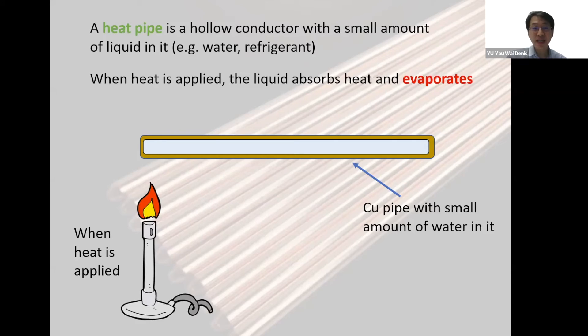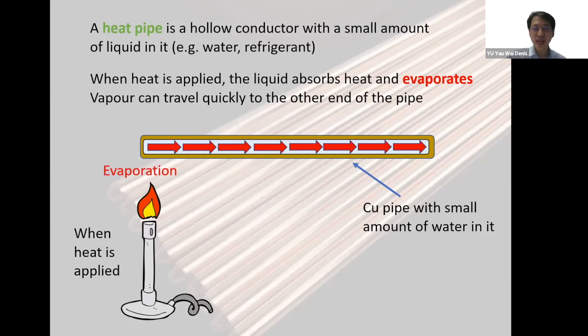When you apply heat to the heat pipe, the liquid will absorb the heat and then evaporate into vapor. The vapor can actually travel very quickly to the other end of the heat pipe where it is cold. Then the vapor will condense and release the heat at the other end.